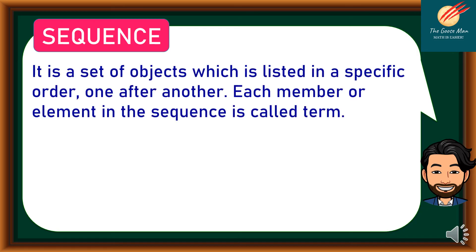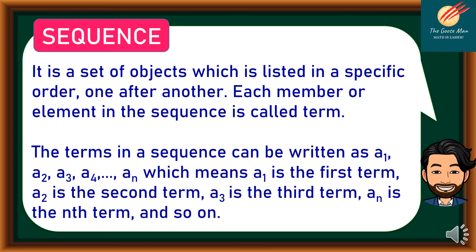A sequence is a set of objects which are listed in a specific order, one after another. Each member or element in the sequence is called a term. The first term can be written as a sub 1, a sub 2, a sub 3, a sub 4, and so on — where a sub 1 is the first term, a sub 2 is the second term, a sub 3 is the third term, and a sub n is the nth term.